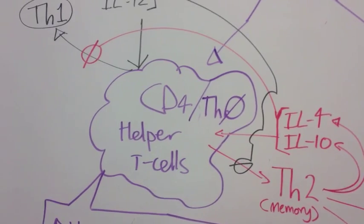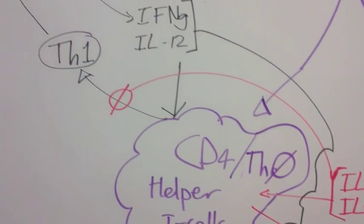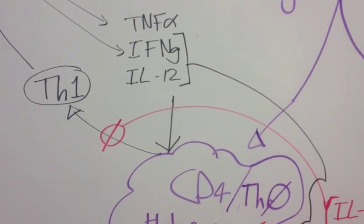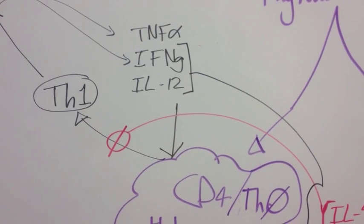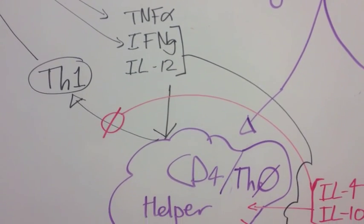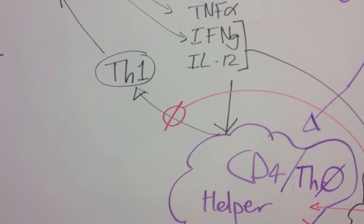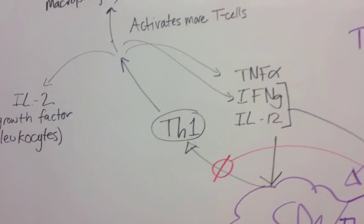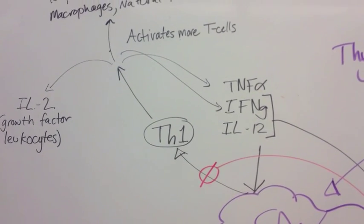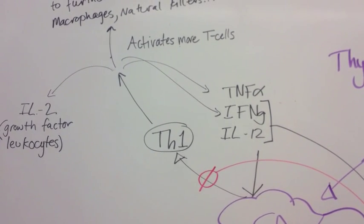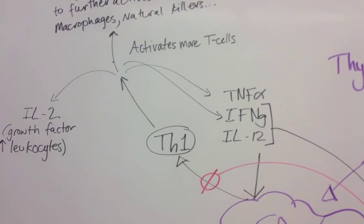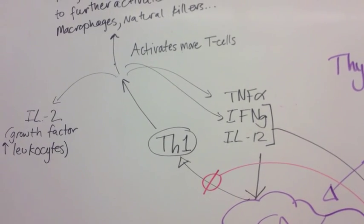When CD4 is acted upon by interferon gamma or interleukin-12, TH0 cells become TH1 cells. This, in turn, creates more interferon gamma and also TNF-alpha.